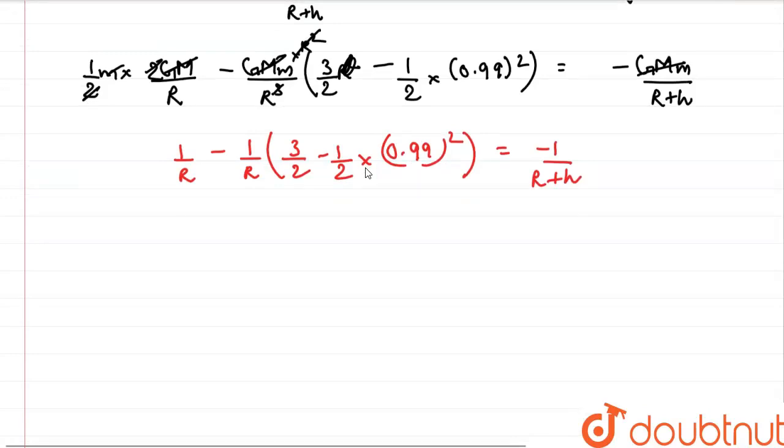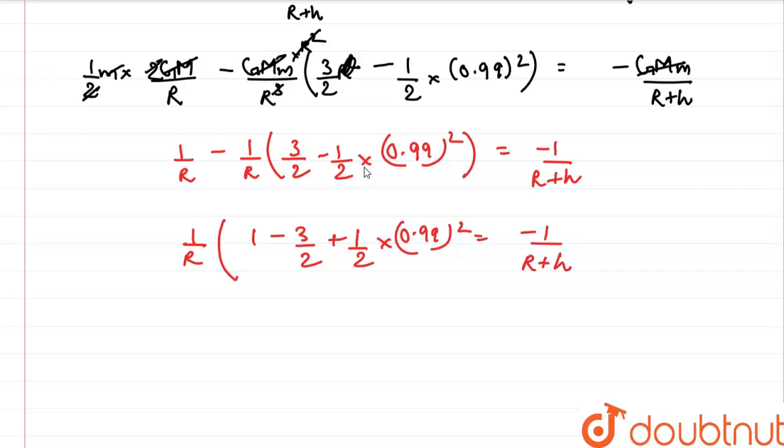Now the complete equation is left in r itself. I am doing some simple mathematics: 1 by r common, 1 minus 3 by 2 plus half into 0.99 whole squared is equal to minus 1 by r plus h. We get the value of h as 99.5r. Therefore our final answer would be height is equal to 99.5r.